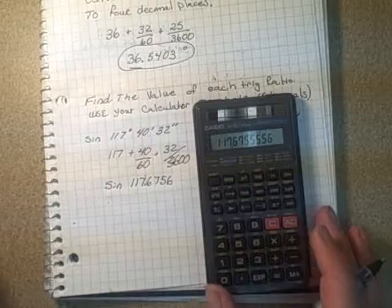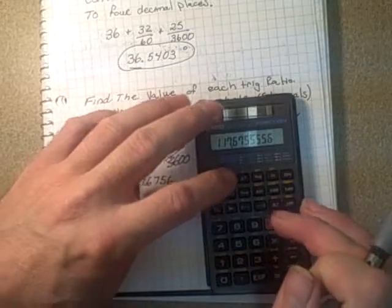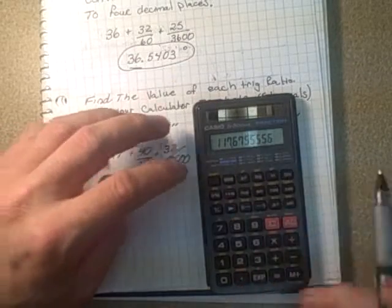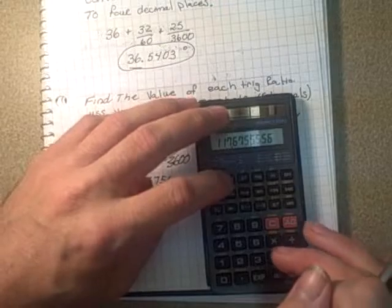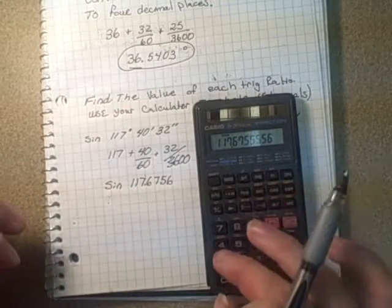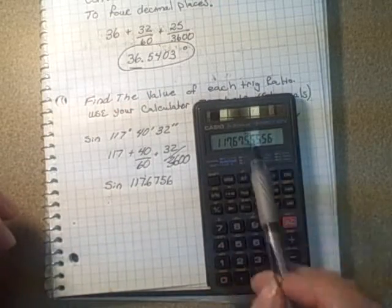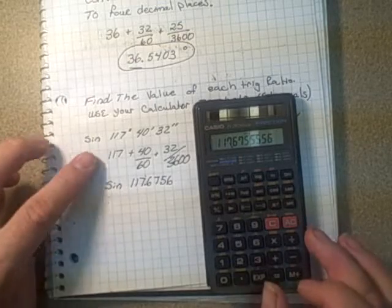I'm simply going to make sure that my calculator here is in degrees. It's in radians right now. So I'm going to hit mode 4 for degrees. Make sure it's in degrees. And then I'm just going to hit the sine button.